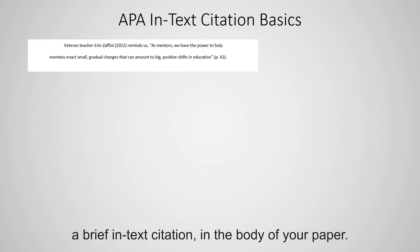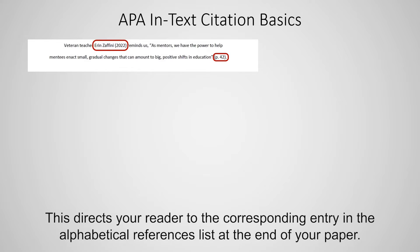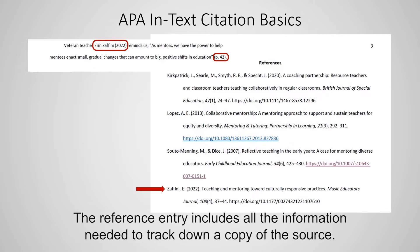A brief in-text citation in the body of your paper — this is typically the author's last name, year of publication, and page number if using a direct quote. This directs your reader to the corresponding entry in the alphabetical references list at the end of your paper. The reference entry includes all the information needed to track down a copy of the source.